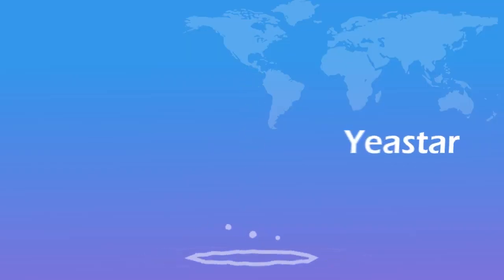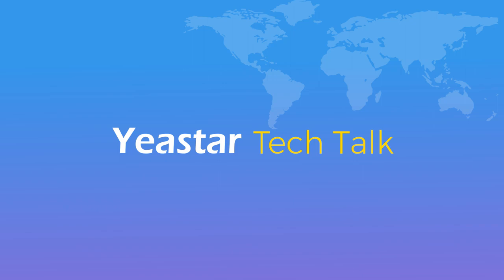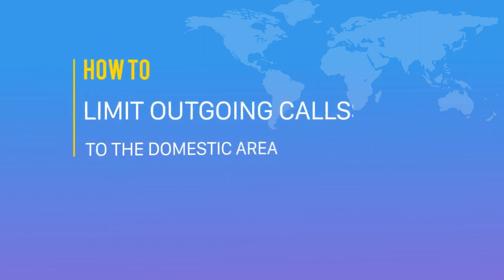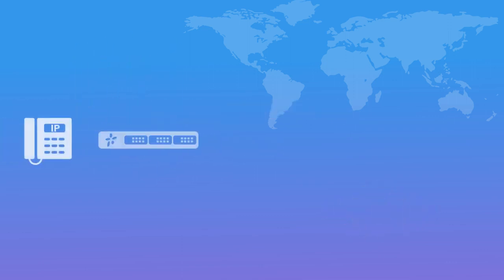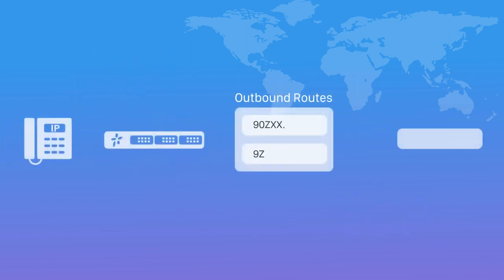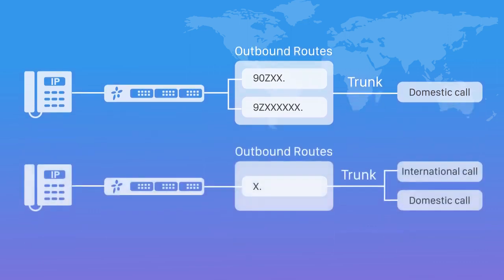Hey guys, Jason here. Welcome to another video tutorial. Today we're going to figure out how to limit outgoing calls to the domestic area. Usually we can design outbound routes with specific dial patterns which will only match domestic calls when we want to limit outgoing calls to domestic areas. However, here's an alternative: